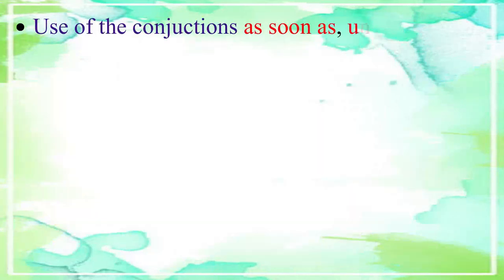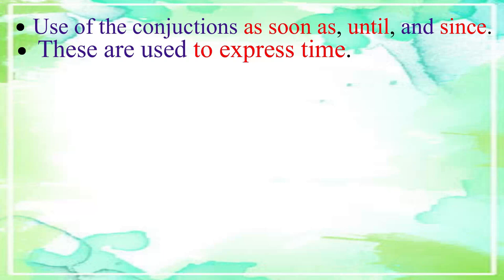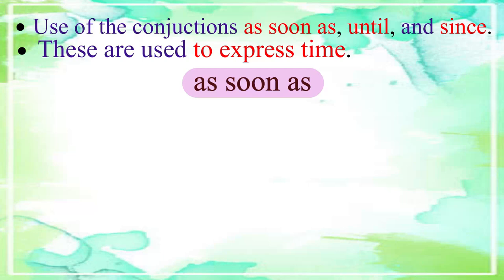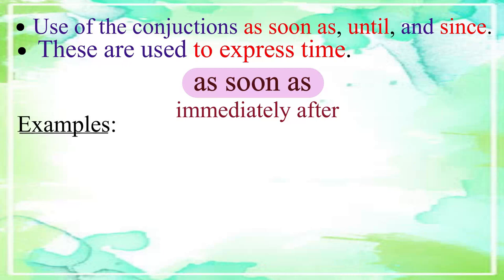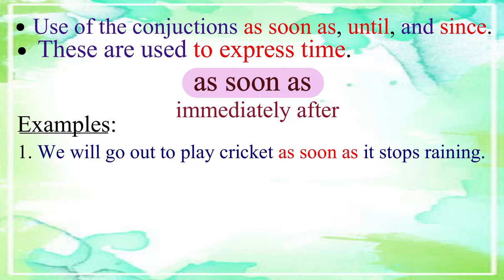The conjunctions 'as soon as', 'until', and 'since' are used to express time. The conjunction 'as soon as' is used when we have to say that some activity follows another activity immediately. For example: 'We will go out to play cricket as soon as it stops raining.'